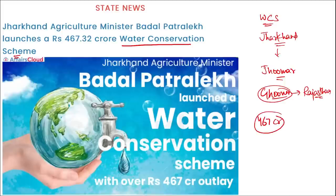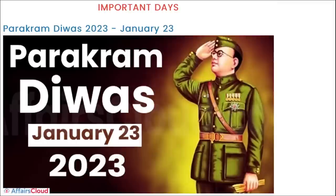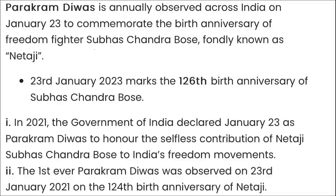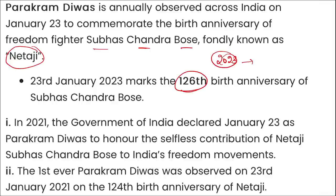Recently, a water conservation scheme with an outlay of 467 crore rupees was launched by Jharkhand Agriculture Minister Badal Patralekha. Next, Praakram Divas is observed on 23rd January in memory of Subhas Chandra Bose's birthday. He was famously known as Netaji. In 2023, this is the 126th birth anniversary. From 2021 onwards, 23rd January is observed as Praakram Divas.